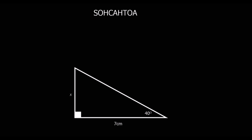Here we've got a SOHCAHTOA question. SOHCAHTOA is another relationship for right-angle triangles. We use Pythagoras if we're looking at all three lengths — we know two and work out one. With SOHCAHTOA there is also a right angle, but there's another angle involved. So we use SOHCAHTOA when there's another angle involved as well.